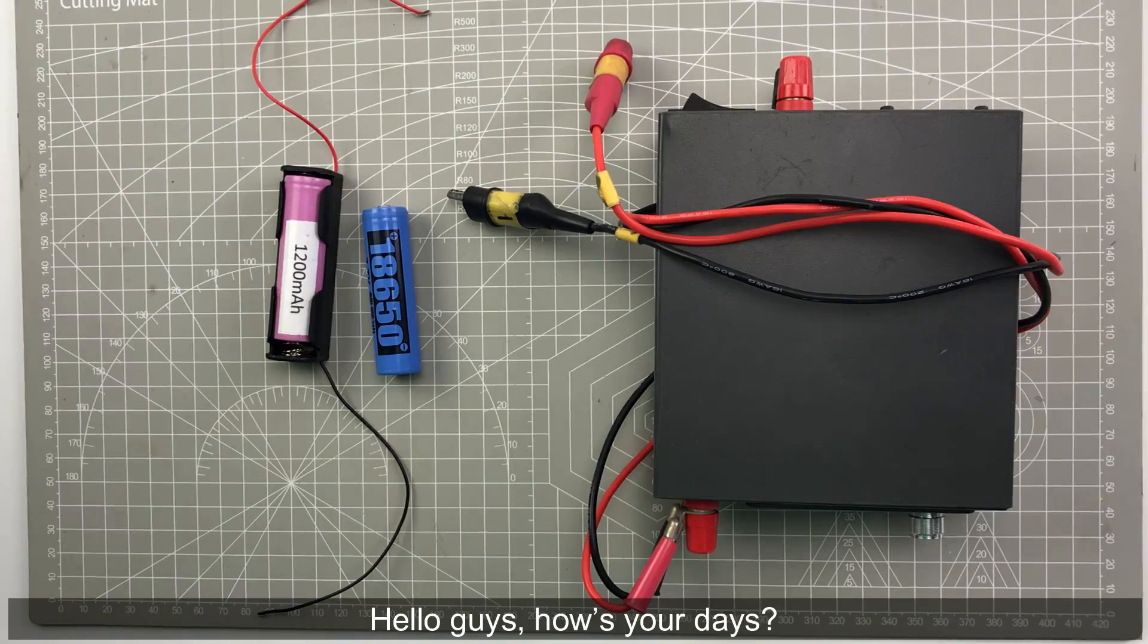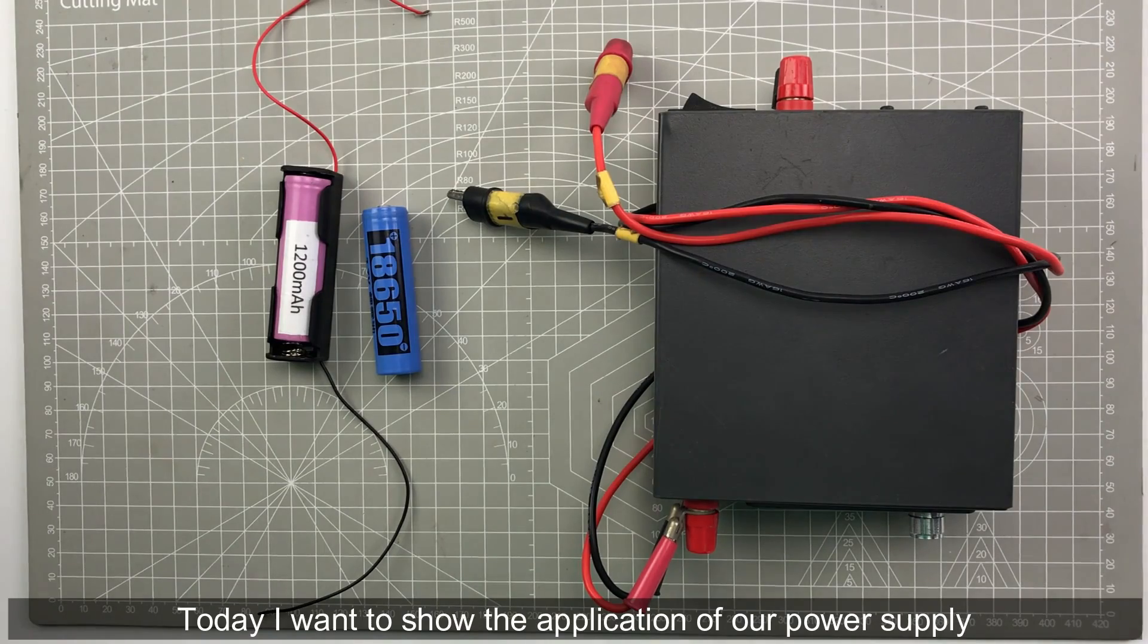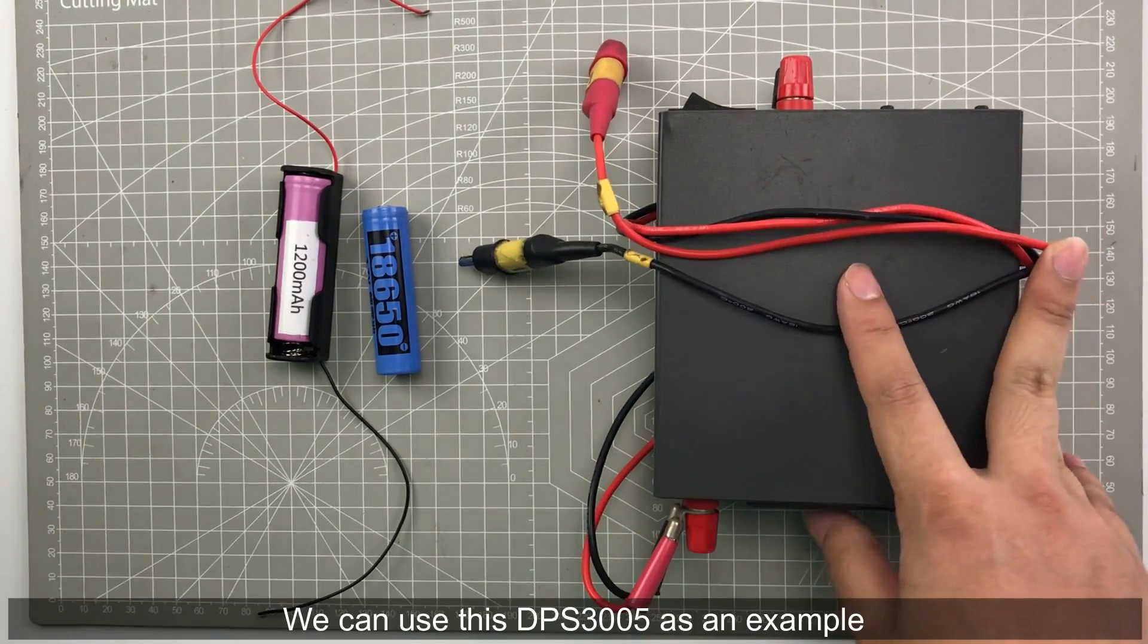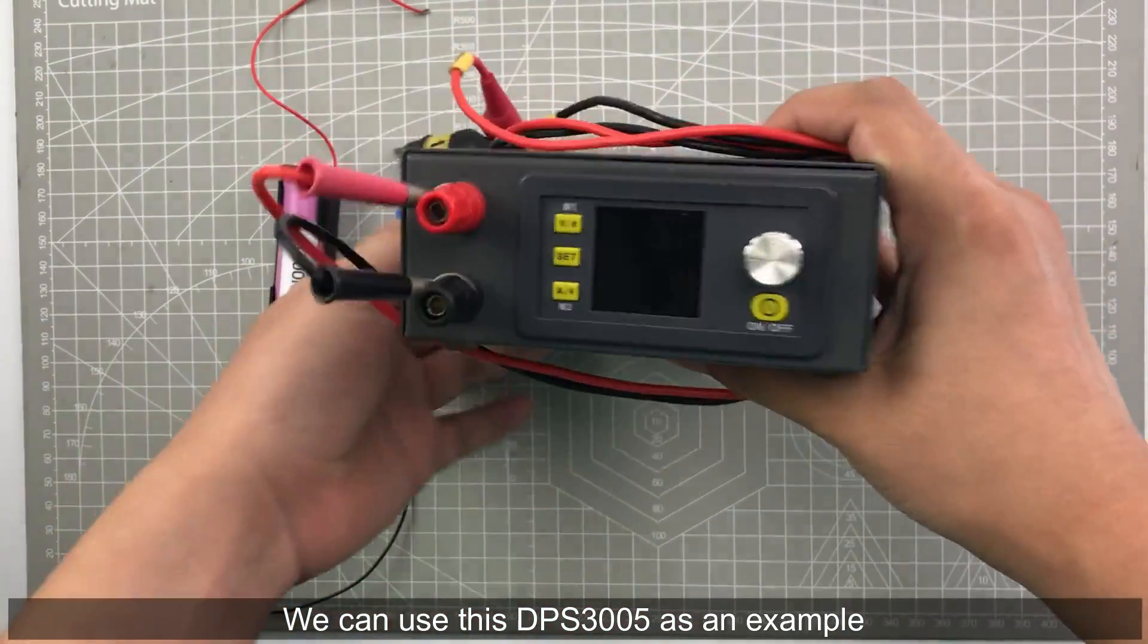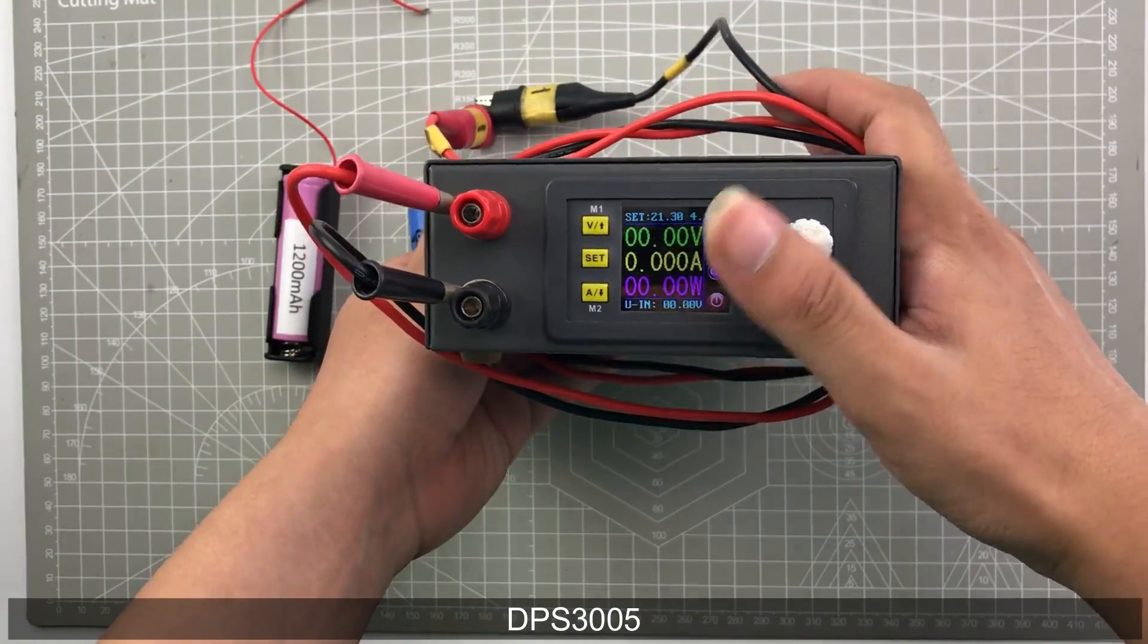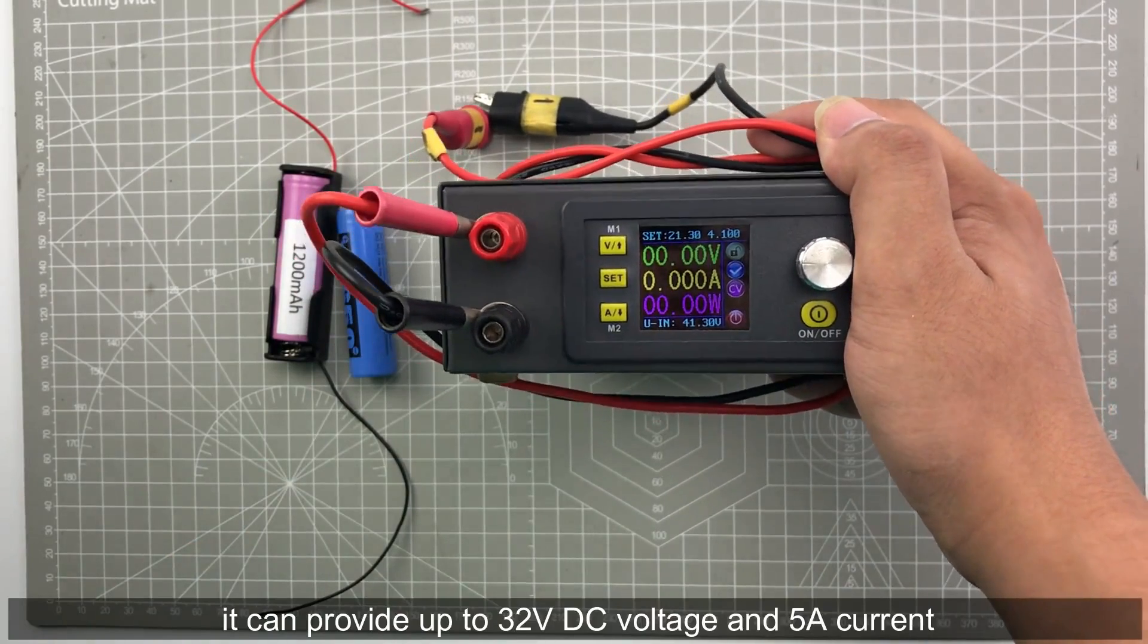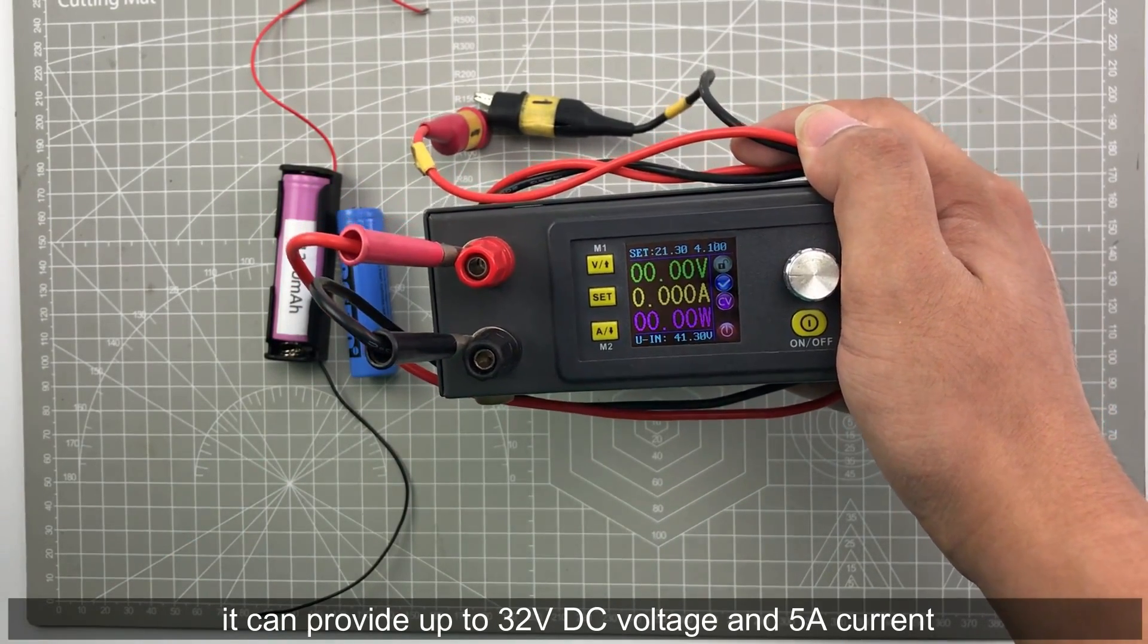Hello guys, how is your day? Today I want to show the application of our power supply. We can use this DPS 305 as an example. DPS 305 can provide up to 32 volt DC voltage and 5 amp current.